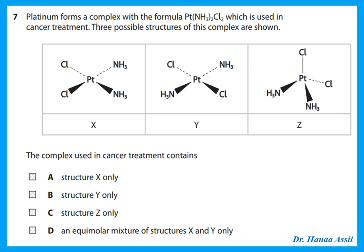Platinum forms a complex used in cancer treatment. Three possible structures are shown. The complex used in cancer treatment is cisplatin — the square planar complex with two chlorines and two ammonias in the cis arrangement. Structure X is cisplatin. Structure Y is the trans isomer, which is not used. Structure Z is a cis arrangement but tetrahedral, not square planar. Only X, the square planar cis isomer, is used in cancer treatment.